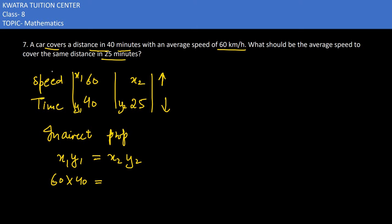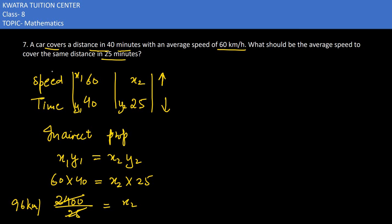Taking X1 as 60 and Y1 as 40, with X2 unknown and Y2 as 25: 60 into 40 equals 2400, divided by 25 gives X2. So the value you get is 96 km per hour for the second situation — that is the speed needed to cover the same distance as done in 40 minutes at 60 km per hour.